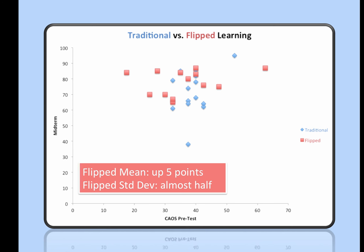The blue dots are students in the traditional lecture-based classroom with some activities, but mostly lecture. Along the bottom axis you have the pre-test scores, and along the side axis you have the midterm scores.